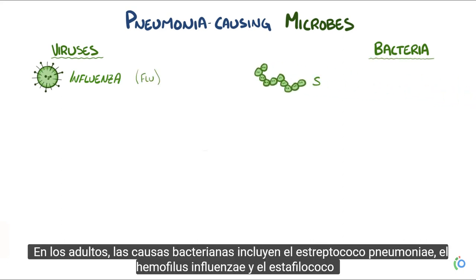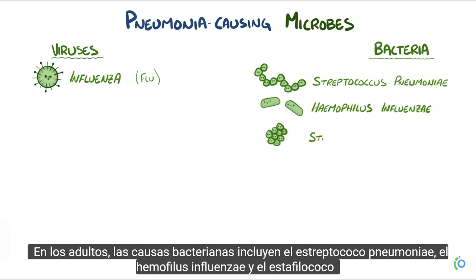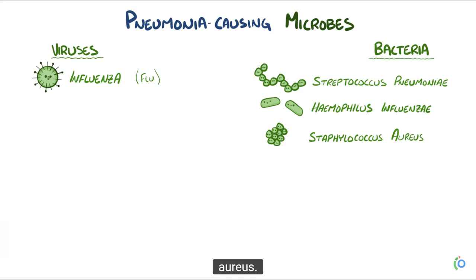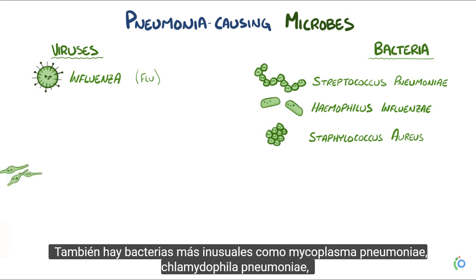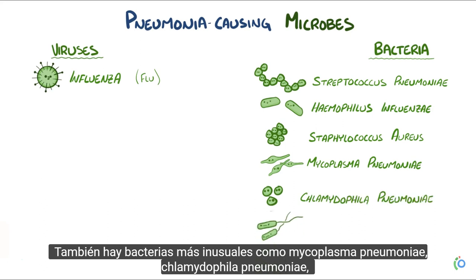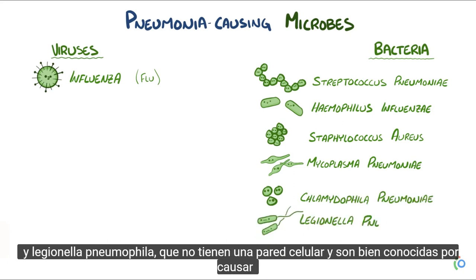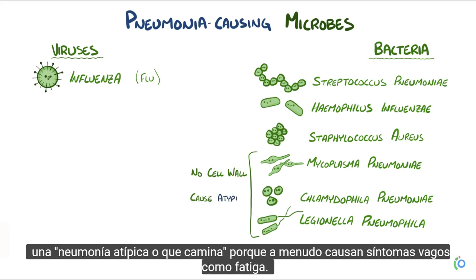In adults, bacterial causes include Streptococcus pneumoniae, Haemophilus influenzae, and Staphylococcus aureus. There are also more unusual bacteria like Mycoplasma pneumoniae, Chlamydophila pneumoniae, and Legionella pneumophila, which don't have a cell wall and are well known for causing an atypical or walking pneumonia, because they often cause vague symptoms like fatigue.